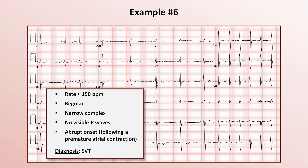This rhythm is occasionally referred to as PSVT, with the P standing for paroxysmal. If you saw the rate was 150 and considered this could be atrial flutter, that's a good thought — and it could be — which is why I stated this is almost certainly an SVT.